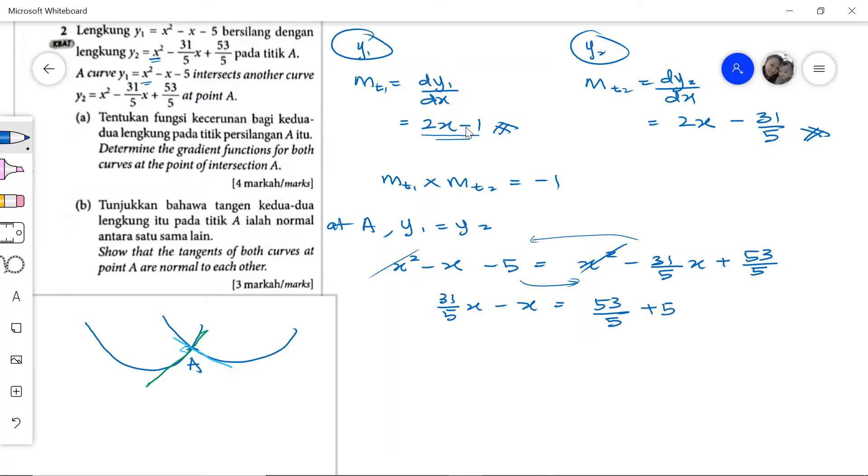This gives us 31 minus 5, so we have 26 over 5x equals, finding the lowest common multiple, 78 over 5. Therefore, x equals 78 over 5 times 5 over 26, which simplifies to 3. So our x value is 3.